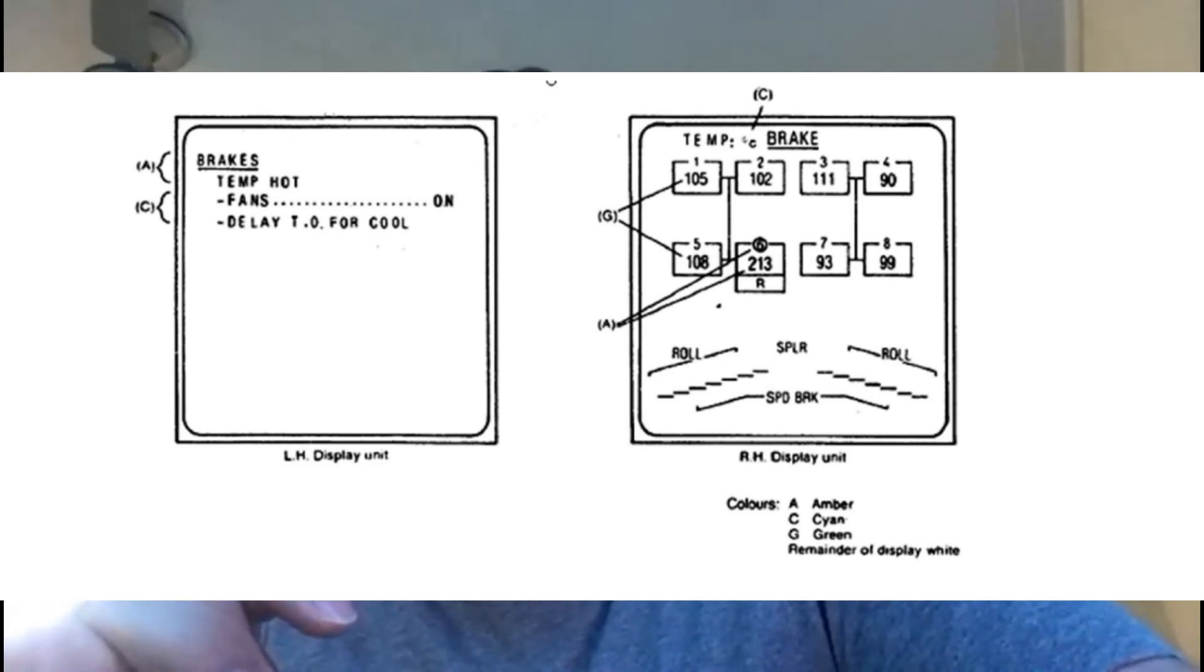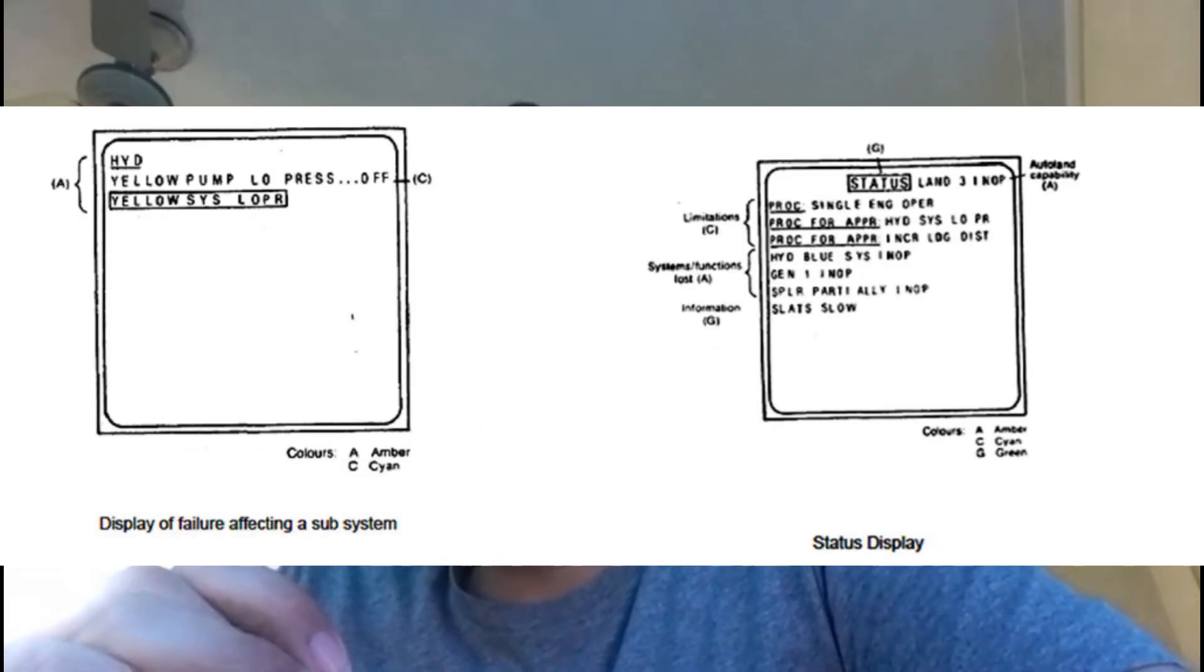There are four display modes, three of which are automatically selected and referred to as flight phase related advisory modes or advisory mode, and status and failure related modes. The fourth mode is manual and permits the selection of a diagram related to any one of 12 of the aircraft systems for routine checking.